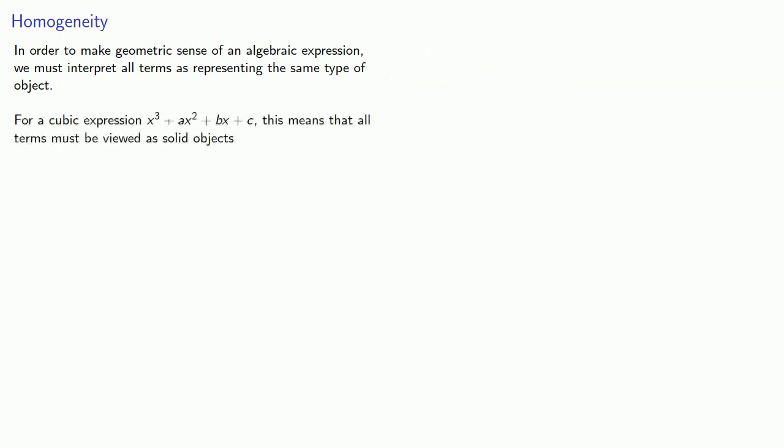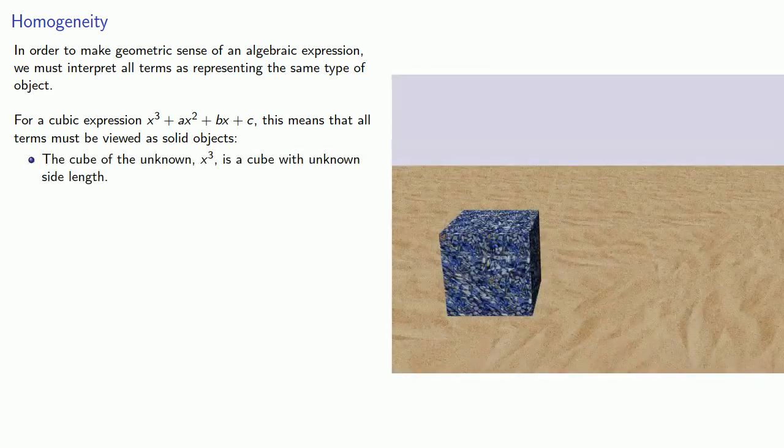So for a cubic expression x³ + ax² + bx + c, this means that all terms must be viewed as solid objects. The cube of the unknown, x³, is a cube with unknown side length.